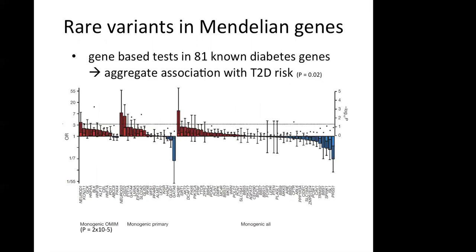The next question asked was whether rare variants were enriched in Mendelian diabetes-related genes. They did a gene-based test in 81 non-diabetes genes and did find a signal, though admittedly quite modest with a p-value of 0.02. They could show that there was an aggregate association with type 2 diabetes risk, even though no individual gene came up as significant by itself.